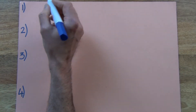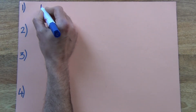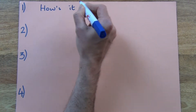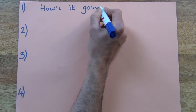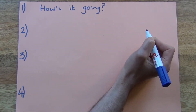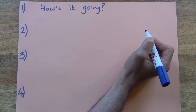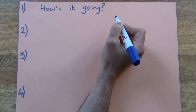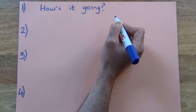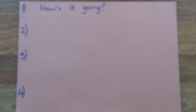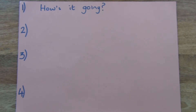The first question you should ask somebody looks like this. This question means 'how are you?' In English, we often say 'how's it going?' Listen again and repeat after me: how's it going? And this sentence means 'how are you?'